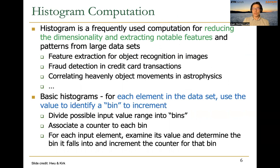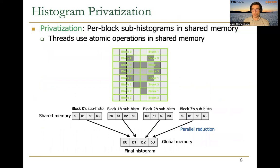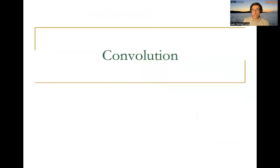In the past lecture, we talked about histogram computation. Histograms are frequently used for reducing the dimensionality and extracting notable features in large input data sets. The basic idea in a histogram is that we check each possible input value and then update one bin in the histogram — we increment the counter associated to each bin depending on the value of the input. For histogram calculation, we need to use atomic operations. One way of optimizing the use of atomic operations is privatization, a technique that places different sub-histograms for each of the thread blocks. These sub-histograms are calculated in parallel and finally reduced altogether.